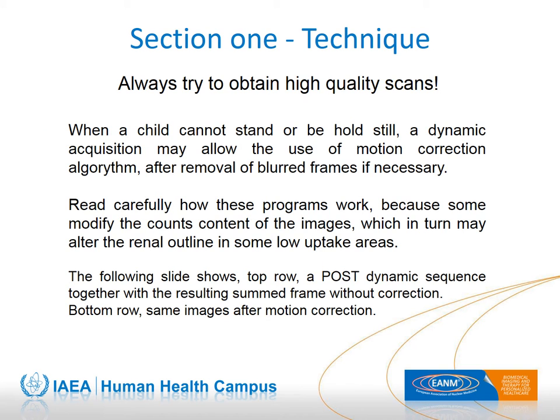When all immobilization techniques fail and there is no chance of sedation, a good scan can still be obtained by changing the technique and acquiring a dynamic scan — 40 frames, 15 seconds each. We then apply motion correction for the corresponding frames and sum them to obtain a single image. It is not recommended to use a framing time below 15 seconds, otherwise the images will be too faint for correct repositioning. If the software allows, the scan result can also be improved by eliminating the most blurred frames. Before beginning with this technique, read the manual carefully on how these programs work.